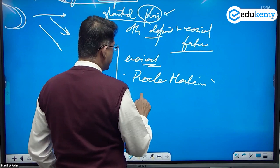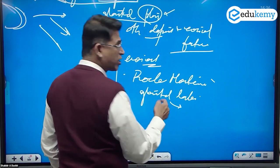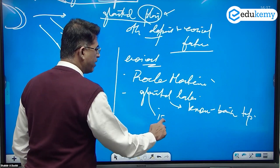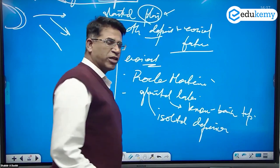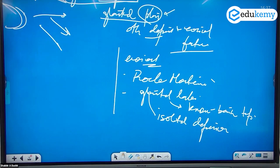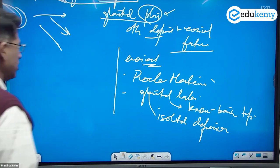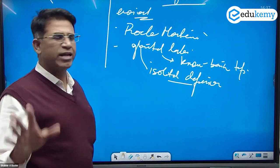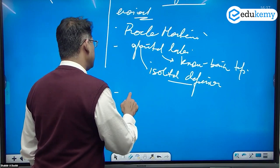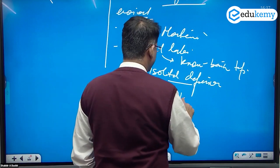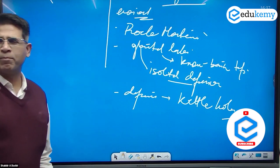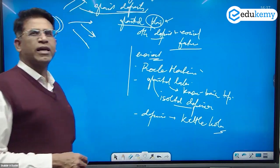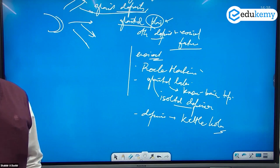They will also have glaciated lakes. These glaciated lakes can be of the knob-and-basin topography type, or they can be isolated depressions plucked out by glacial movement. These isolated glacial depressions can form high-altitude lakes. So roche moutonnée, glacial lakes, and isolated depressions — these are some of the erosional features.